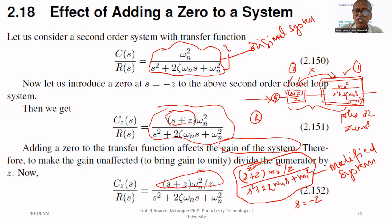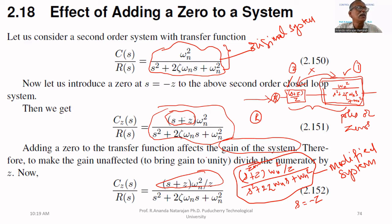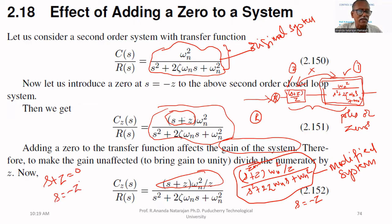In the modified system, a zero is added at S equal to minus Z. Why S equal to minus Z? Because S plus Z is added, so the zero is found by setting S plus Z equal to zero, giving S equal to minus Z. This is the zero that has been added.